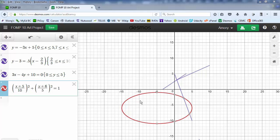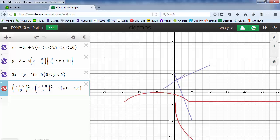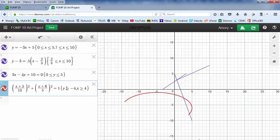With the ellipse, we can also restrict the domain and range. y is greater than or equal to negative 4. You can also add in the domain here. x is greater than or equal to 0.